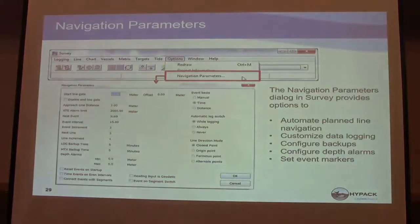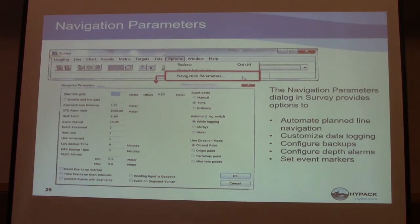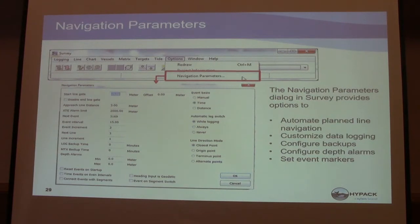Navigation parameters: the navigation parameters dialog in survey provides options to automate planned line navigation, customize data logging, configure backups, depth alarms, and set event markers. It's under Options in the survey window — navigation parameters. This is where you set your start line gate and all the parameters we were talking about.